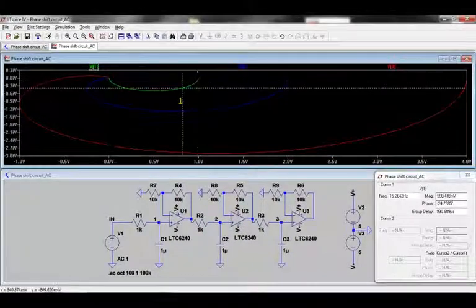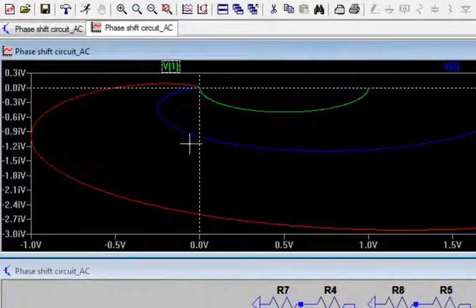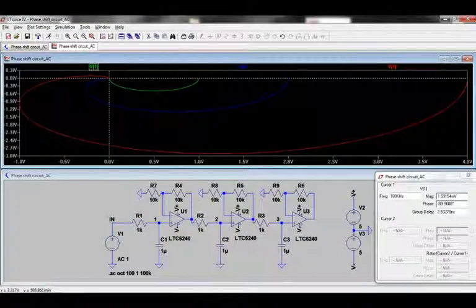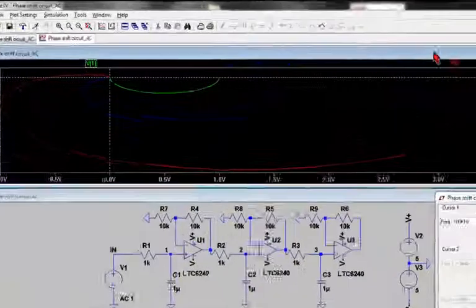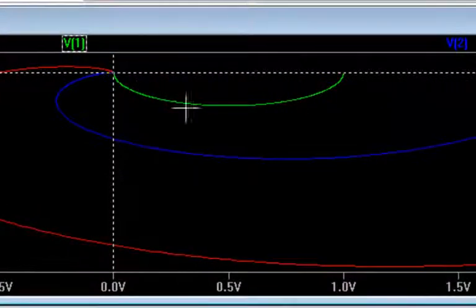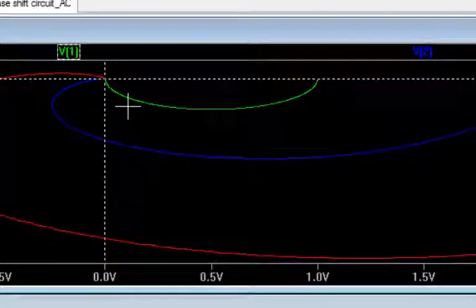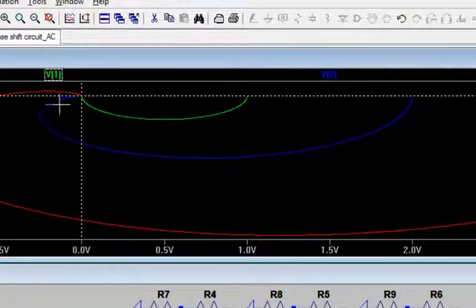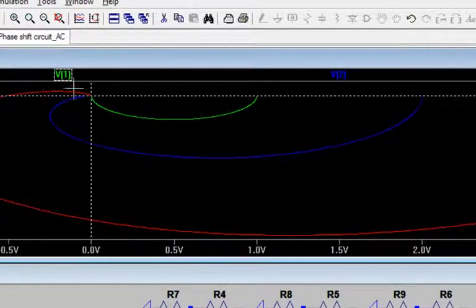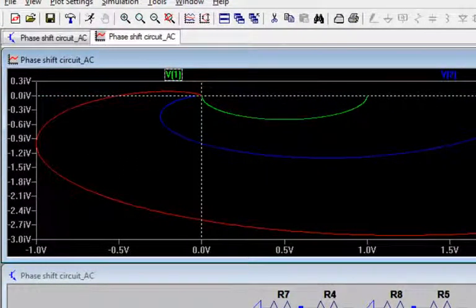If I move the cursors to the zero real, zero imaginary point, this neatly divides the plot window into four quadrants. So we can see here that the voltage across capacitors C1 lies in the first quadrant, the voltage across capacitors C2 strays into the second quadrant, and the voltage across capacitors C3 strays into the third quadrant.